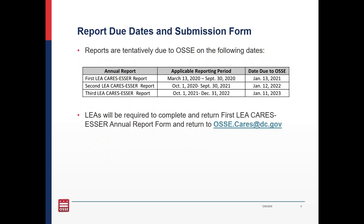Here are the tentative annual reporting deadlines. We don't expect the deadlines to be changed by the U.S. Department of Education as they finalize their requirements. Please be prepared to submit the first LEA annual report to OSSE by January 13th, 2021. The first annual report corresponds to fiscal year 2020, or FY20, and EGMS, and will require data inputs for the period running from March 13th, 2020 to September 30th, 2020. LEA annual reports will also later be required for fiscal years 21 and 22. LEAs will be required to complete the first LEA CARES ESSER annual report form and return it to osse.cares@dc.gov. I've attached the form to this presentation and will also email the forms out later this week.